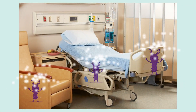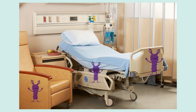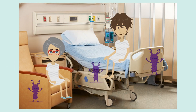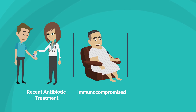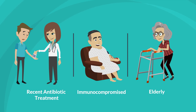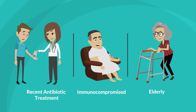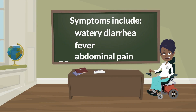C. diff spores can survive on environmental surfaces for months at a time. New infections can occur when the spores from an infected individual find their way into the stomach of another vulnerable patient. Recent antibiotic treatment, being immunocompromised or elderly, place patients at highest risk. C. diff infections can be mild to life-threatening. Symptoms of infection include watery diarrhea, fever, and abdominal pain.